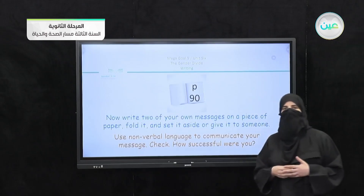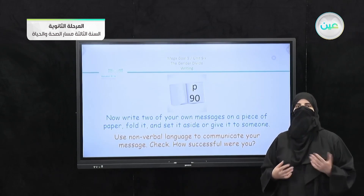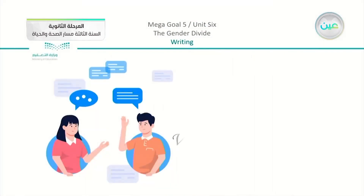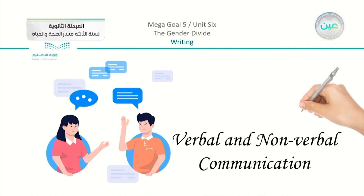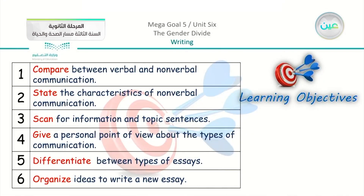This exercise is on page number 20 in your book. You can apply this activity with a classmate, a friend, or even a member of the family. Now moving on, we are going to write about verbal and nonverbal communication. Our objectives for today are: to compare verbal and nonverbal communication, state the characteristics of nonverbal communication, scan for information and topic sentences, give a personal point of view about communication types, differentiate between types of essays, and organize ideas to write a new essay.